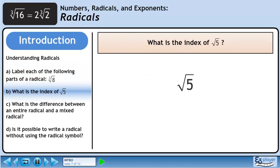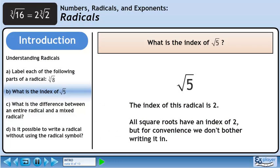Moving on to Part B, we are asked what is the index of root 5? The index of this radical is 2. All square roots have an index of 2, but for convenience we don't bother writing it in.